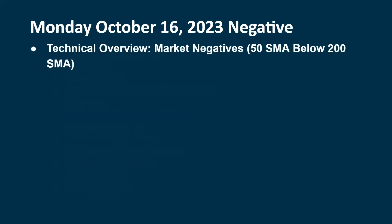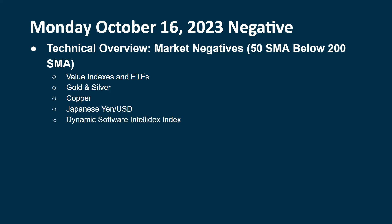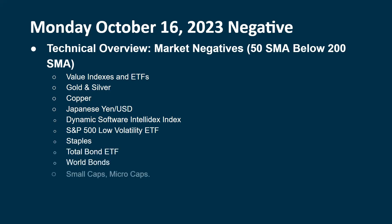In summary: positive items — growth indexes and ETFs, CRB index, the dollar, mega caps, Dow Jones composite, FANG, ARK, high-yield junk bonds, tech sector, semiconductors, high-leverage loans, the Dow, mid caps, NASDAQ and NASDAQ 100, NYSE composite, and all stocks. Negative items — value indexes, gold and silver, copper, Japanese yen versus dollar, the dynamic software index, low volatility ETF, staples, total bond ETF, world bonds, small caps, micro caps hitting 52-week lows, emerging markets, and investment-grade and corporate bonds. Bitcoin recently crossed to a death cross and is chopping sideways.